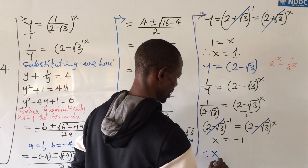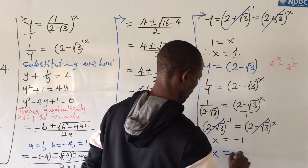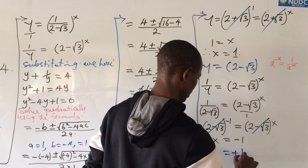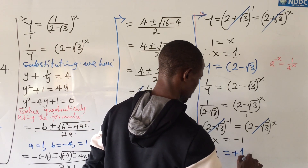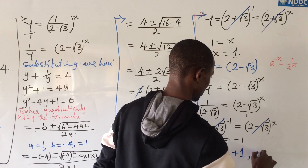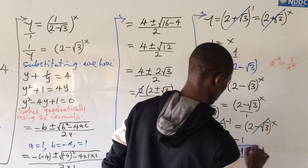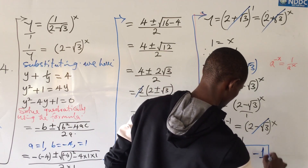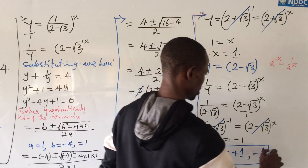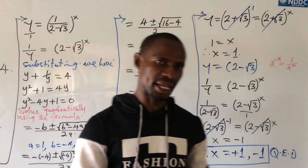Therefore, our x is equal to plus 1 and minus 1. These are the two possible values.